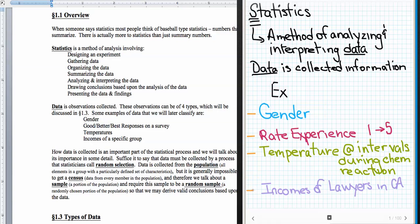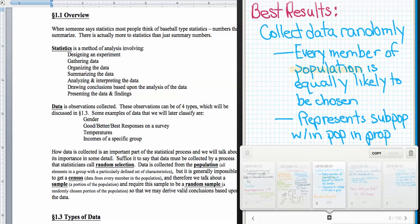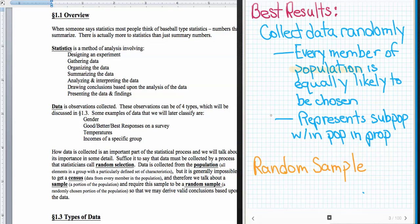So we have all kinds of different types of data. We're going to go into the types of data in section 1.3 and talk about the different categorizations and how we can relate that. Now the next thing that we're going to talk about is, how are we going to get this information? Why do we want to get the information?